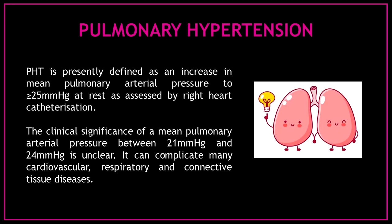Pulmonary hypertension is presently defined as an increase in mean pulmonary arterial pressure to 25 millimeters of mercury at rest as assessed by right heart catheterization. The clinical significance of a mean pulmonary arterial pressure between 21 and 24 millimeters of mercury is unclear. It can complicate many cardiovascular, respiratory and connective tissue diseases.